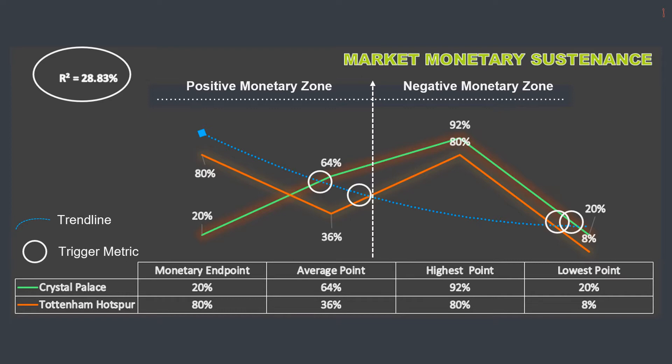Tottenham Hotspur fared better in the two-layer clarity zones when it came to trendline interpretation. Please take a look at the white circle pointing to the segment intersection that is located in either the positive or negative zoning arena. This is a draw, with each side receiving only one category advantage.